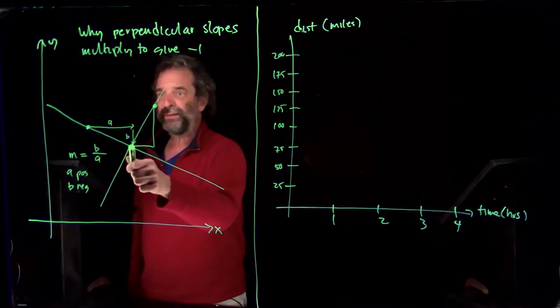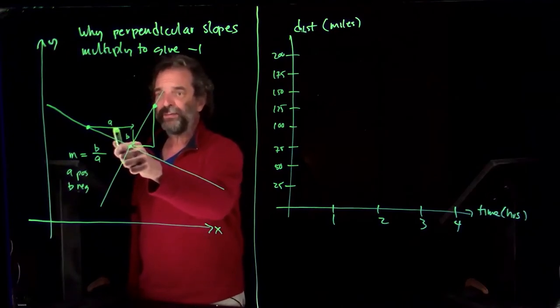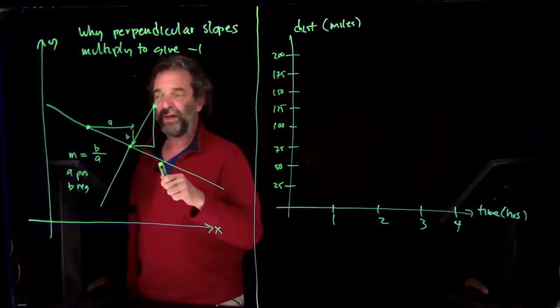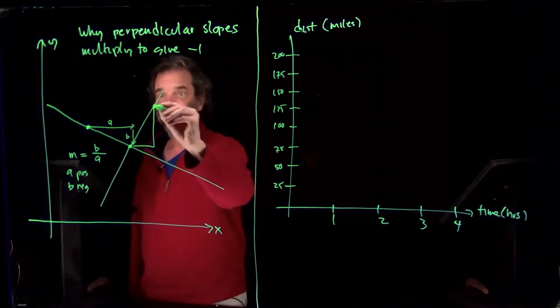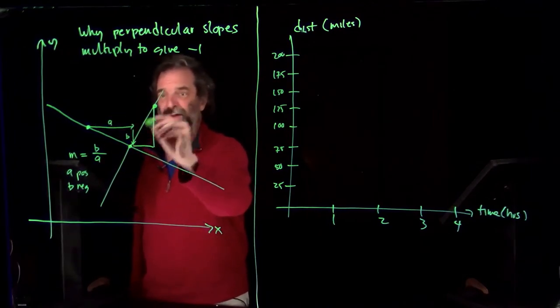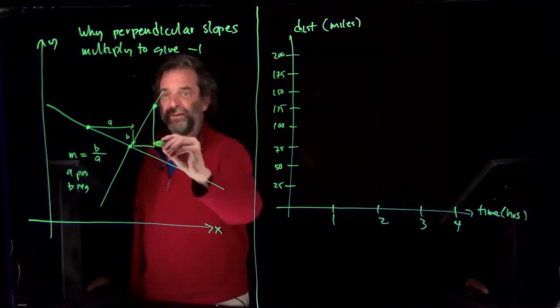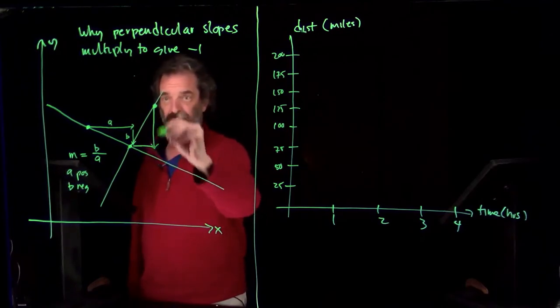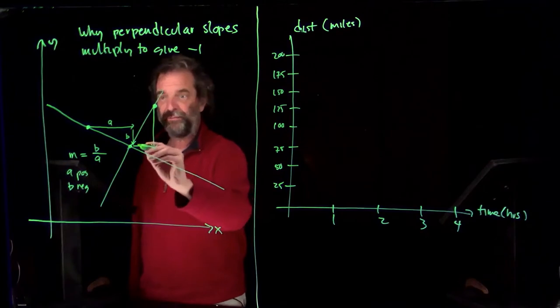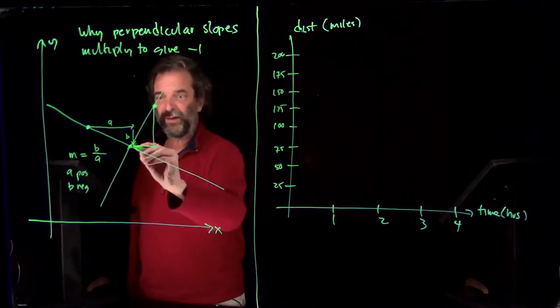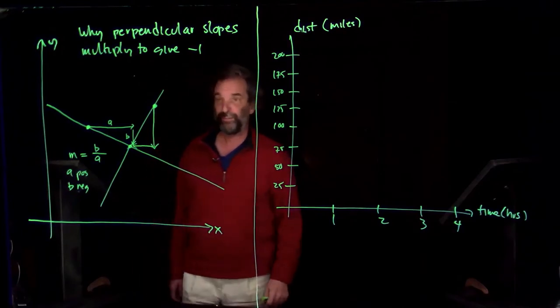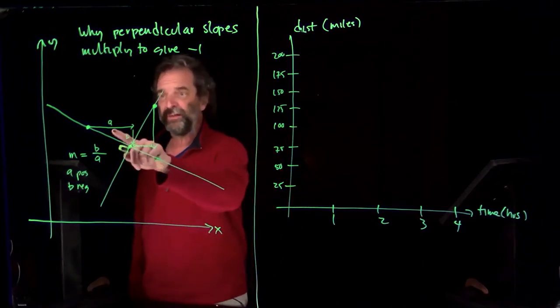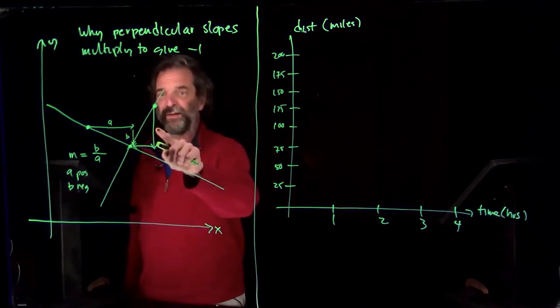So as we move from this point to this point, the change in x was positive and the change in y was negative. Here's that positive number, here's that negative number. Now as we move from the same companion point to here, here's the change in y. And here's the change in x. The arrows come right along with it, but this a here was positive, this a here is negative.